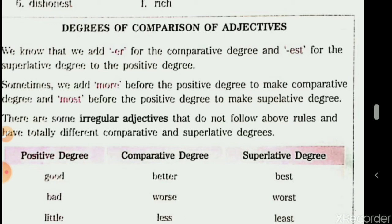Comparative degree is used when we compare two persons or things. And always remember, comparative degree is always followed by the word 'than' — T-H-A-N.